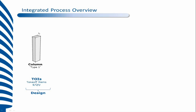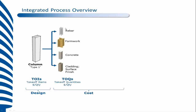So the way that it works: we have a column in the model. We know lots about the quantities in that column, but the column itself doesn't know how it's going to be constructed on site. So we add the data to that column and use the different quantities that are available to us to create an accurate estimate from it. So we'll add the rebar, the formwork, the concrete, the finishing — using the takeoff geometry which we know about this column.